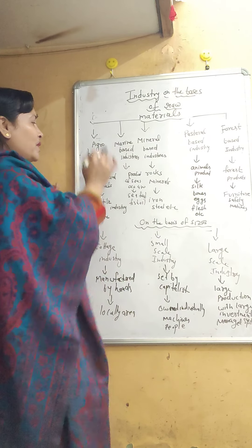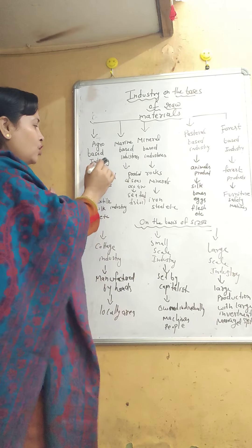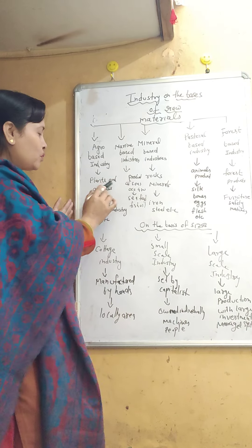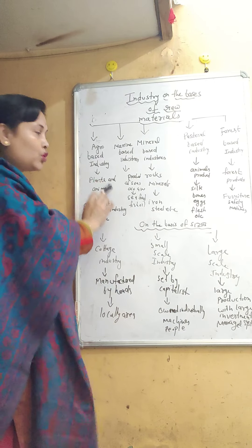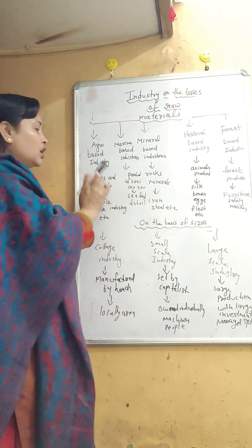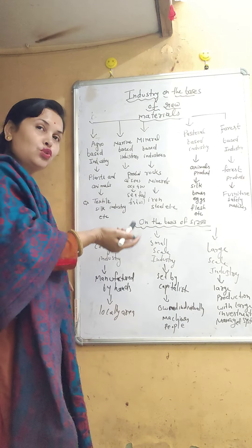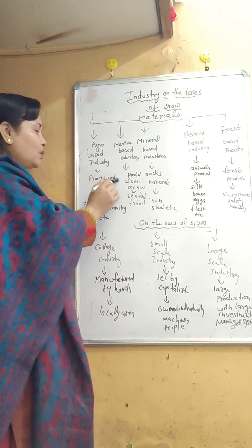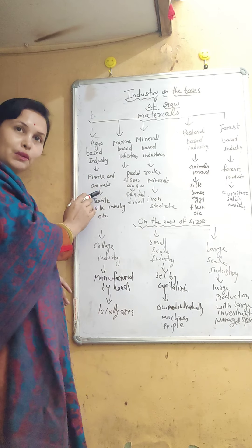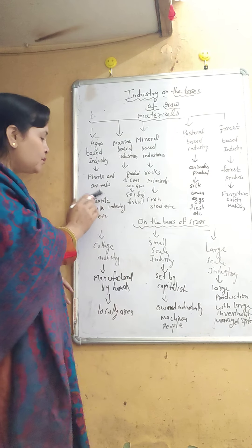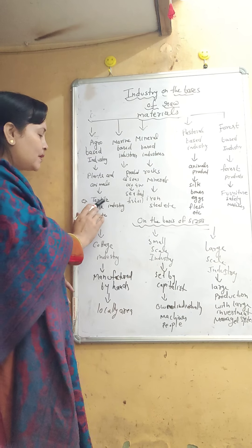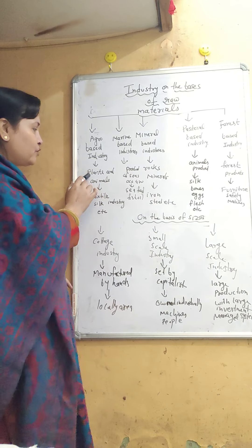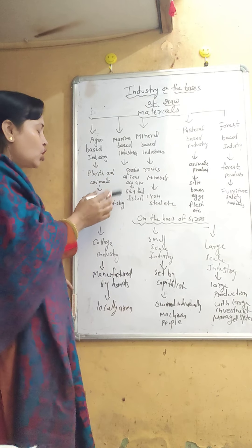First, agro-based industries. What is that? That is based on plants and animal products — those products which are processed regarding plants and animals. For example, textile — we need cotton, which we get from plants.